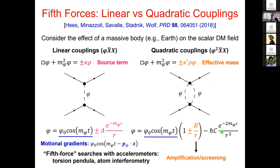There are a number of ways to look for equivalence-principle-violating forces. Traditionally, macroscopic tests using Earth as a source body have been done with torsion pendulum or Cavendish-style experiments, which has been the leading methodology for over a century. However, in recent years, atom-interferometry-based experiments have started to become quite competitive, improving sensitivity to tests of the weak equivalence principle using Earth as the source body by about five orders of magnitude over the past ten years alone.